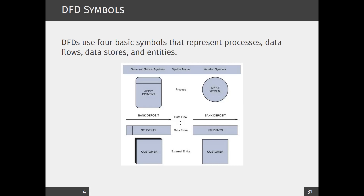The second important graphical component is the data flow, which represents how data flows within different parts of the information system between different processors. Arrows indicate the direction of movement from one process to another — this could be data between processors, data stores, or even external entities. External entities are parties like a customer or a student who are not part of the information system. The third component is data stores, which represent places where we keep data — repositories like databases, files, or other storage mechanisms.